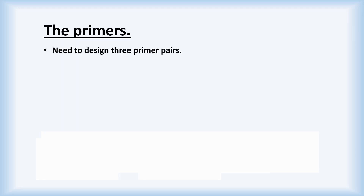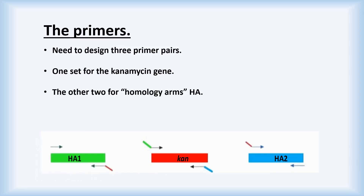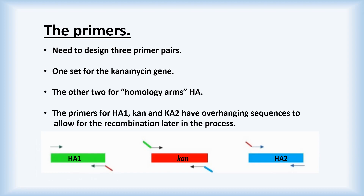We will now go through the design of primers for our gene knockout and insertion of the kan gene. To do this we need to design three primer pairs. One pair will be for our kanamycin gene. The other two pairs of primers will be for regions known as homologous arms. The homologous arms have overlapping sequences. These overlapping regions allow for recombination of PCR amplified fragments later in the process.